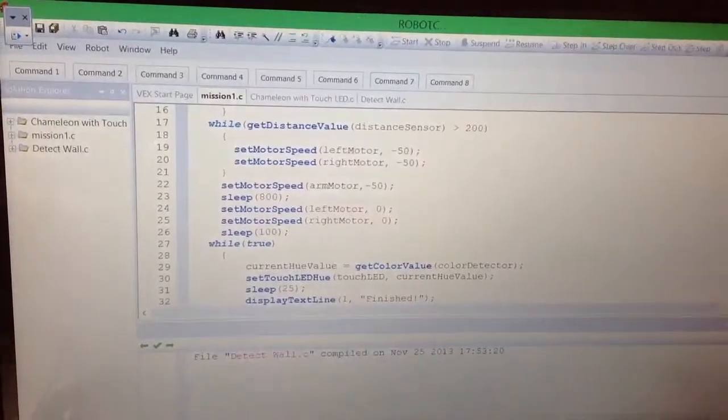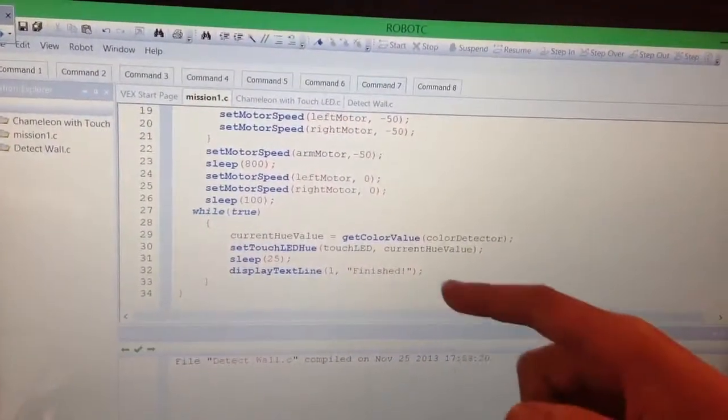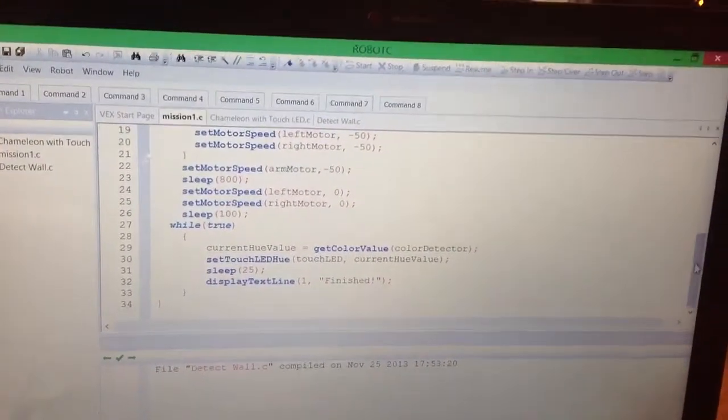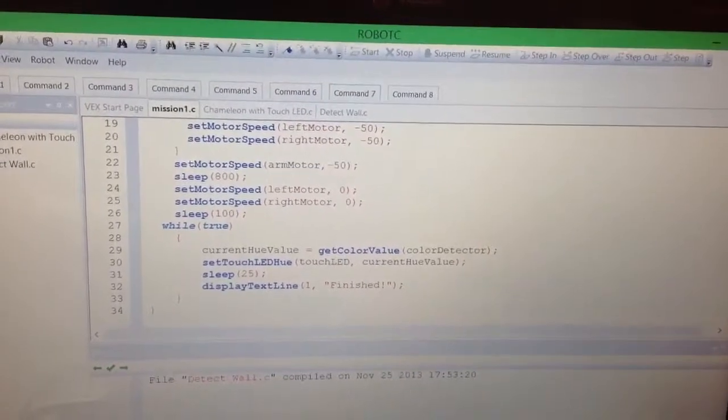And then the arm motor lowers and then it stops. Then it keeps repeating and sensing what color the color sensor gives, and then the touch LED will display it.